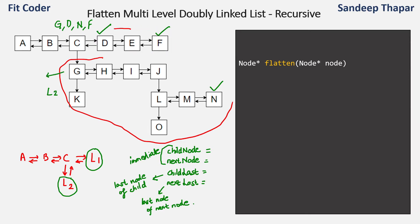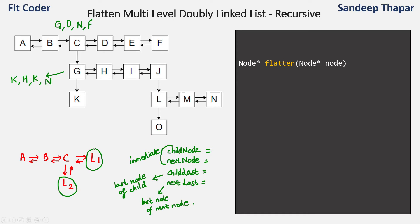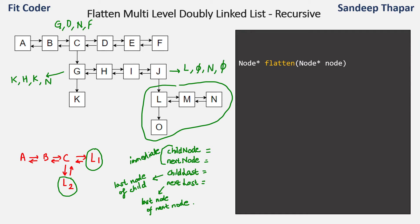Similarly for node G, the two linked lists are K on the child side and the entire list rooted at H on the next side. So for G: child node is K, next node is H, child last is K, and next last is N, because we need to flatten the entire linked list from H onward. For node J there is no next node but there is one child linked list. So for J: child node is L, next node is NULL, child last is N, and next last is NULL. For terminal nodes like K, O, F, and N, all four values are NULL.